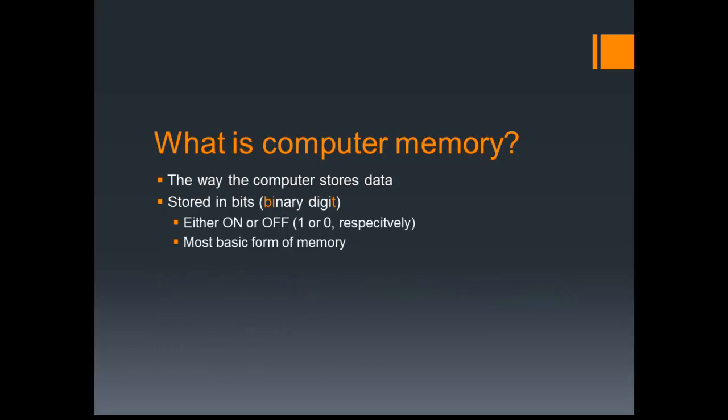So what is computer memory? It's basically the way the computer stores data and how it remembers what you do while it's turned on. Memory is stored in bits, which is a combination of the word 'binary digit,' and a bit can either be on or off in the computer, which equates to a one or a zero respectively. A bit is the most basic form of memory — the smallest amount of memory you can possibly have in the computer is one bit. It's either a true or a false, a one or a zero.